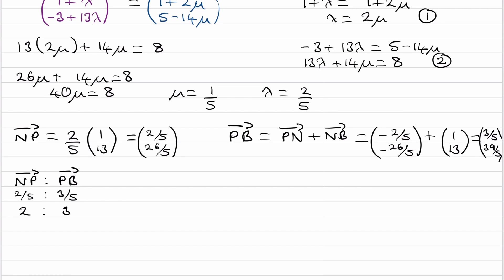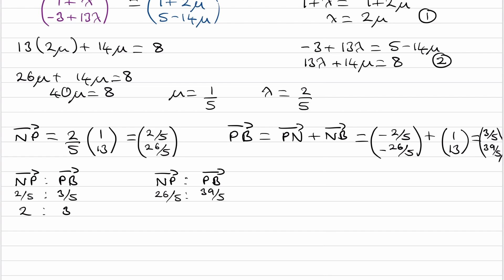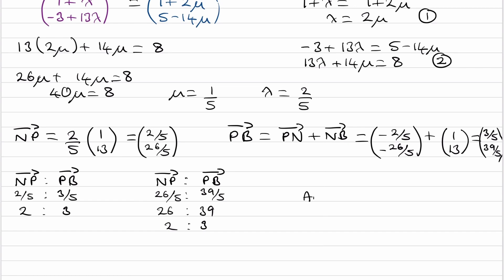We can verify using the j-components: 26/5 to 39/5. Multiplying both by 5 gives 26 to 39, and dividing by 13 gives 2 to 3. So our final answer is 2 to 3.